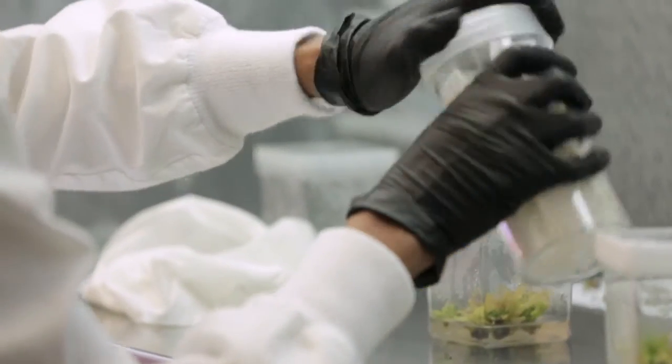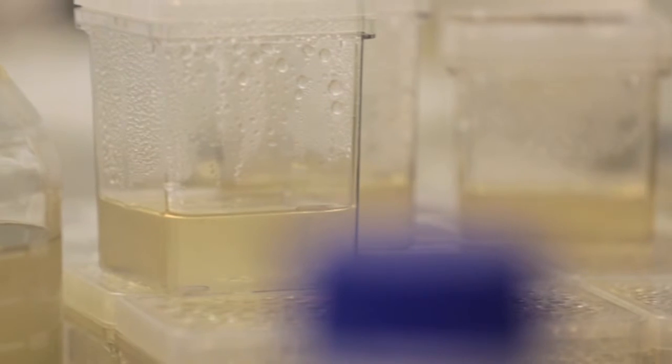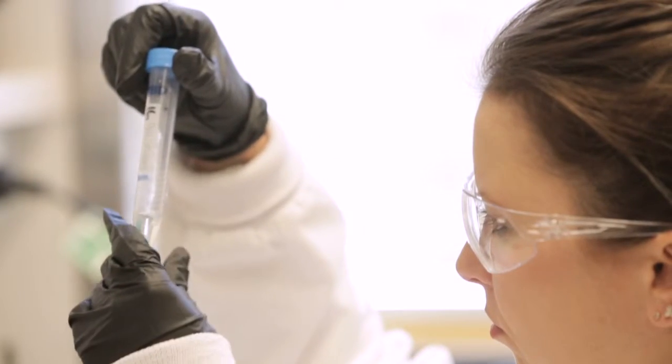At the moment it takes 18 months to take a cutting from avocado and put a special solution on it that induces root production. And we want to cut that step right down so we can get more trees out to our farms to produce a lot more fruit.